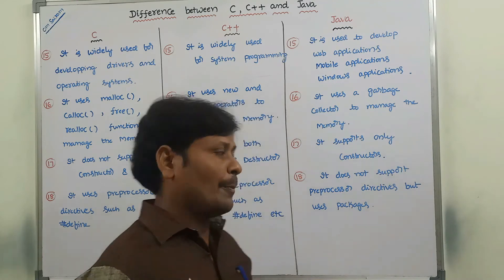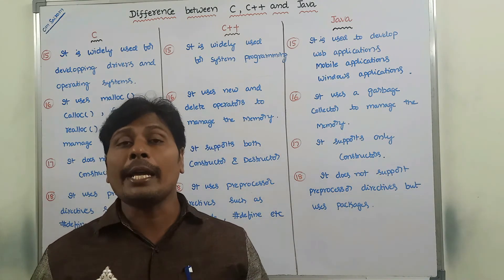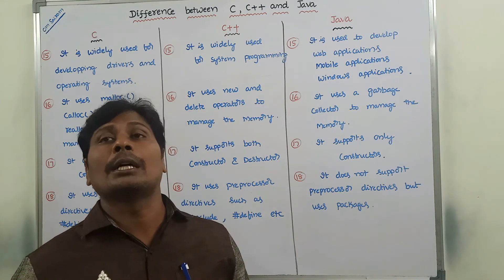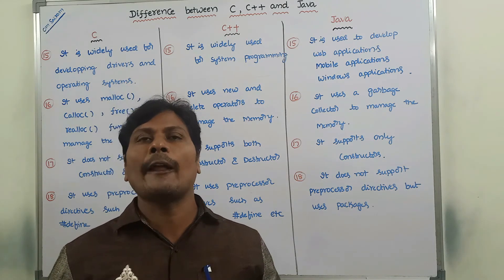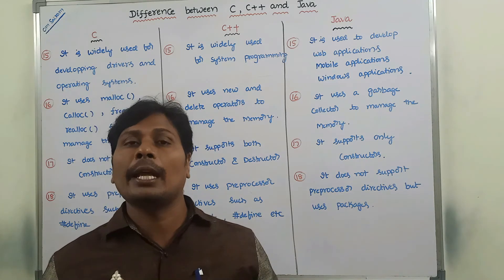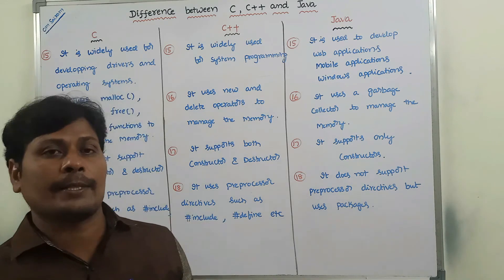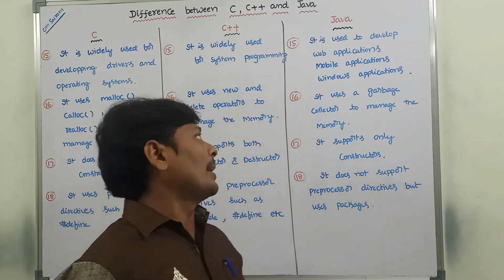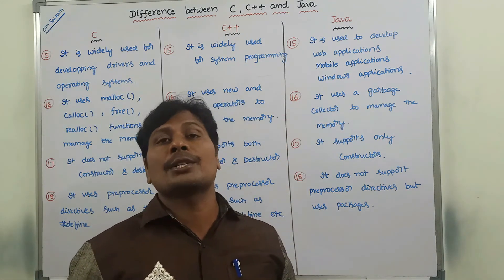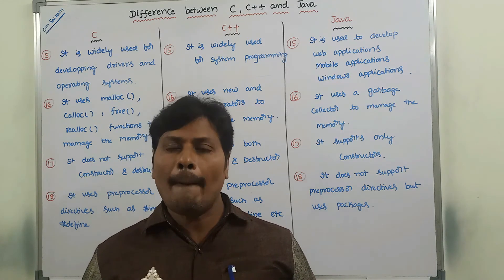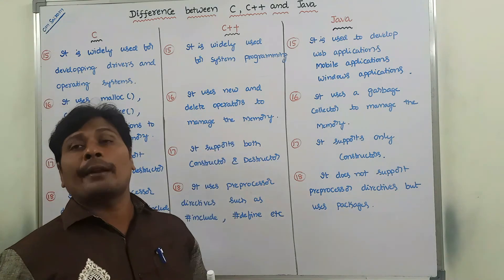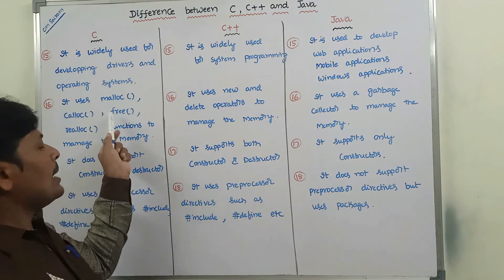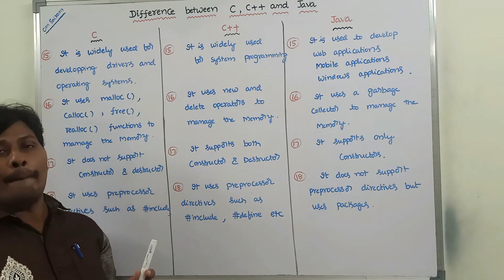C language uses dynamic memory allocation functions to allocate memory at runtime: calloc, malloc, realloc, and free. In C++, we use the 'new' and 'delete' operators to manage memory. In Java, the garbage collector concept is used to manage memory automatically. The 'new' operator is used for allocating memory, and in C++ 'delete' and in C 'free' are used to deallocate memory.